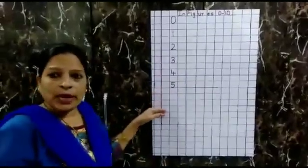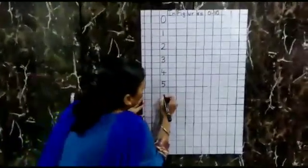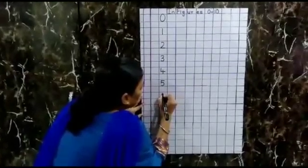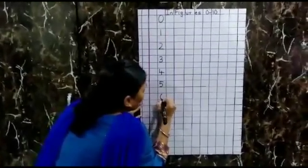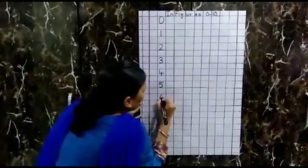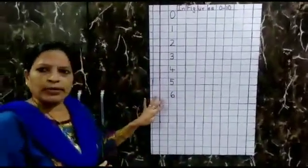Now after 5, what number comes? 6. Very good. Draw a curve line and from the bottom, draw a circle inside it. That makes number 6.